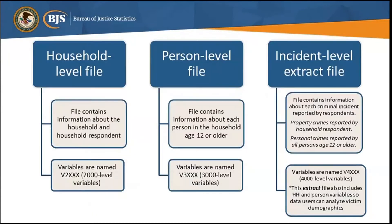There are three most important data files within the NCVS data study. The household file contains information about the household and the household respondent. The household respondent must be 18 years old and is the person most knowledgeable about the household. Household variables are named V2XXX, or these are the 2,000-level variables. The person file contains information about each person in the household ages 12 or older, and person-level variables are named V3XXX, or 3,000-level variables. The incident file contains information about each criminal incident reported by respondents. Personal crimes include violent crimes and personal larceny and can be reported by any person age 12 or older. Property crimes are classified as household-level crimes and reported by the household respondent. Incident-level variables are named V4XXX, or 4,000-level variables.